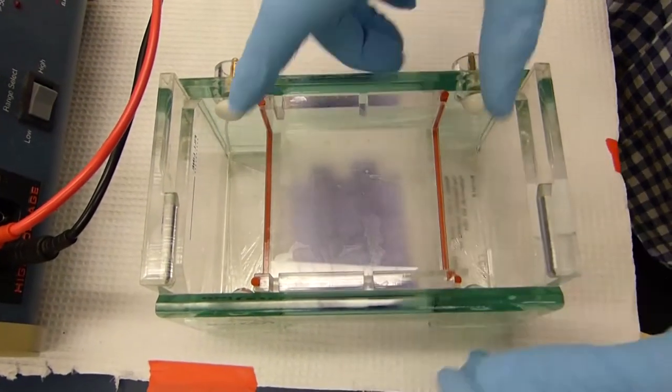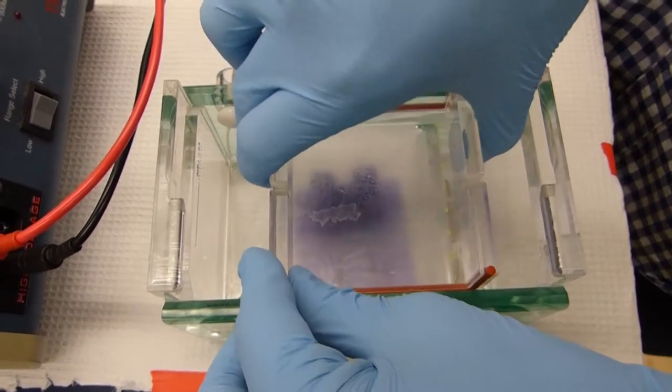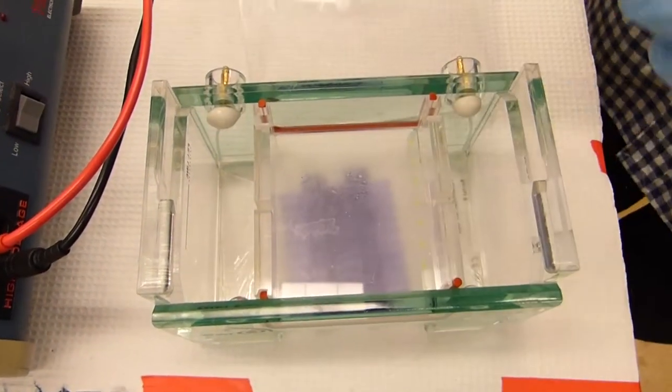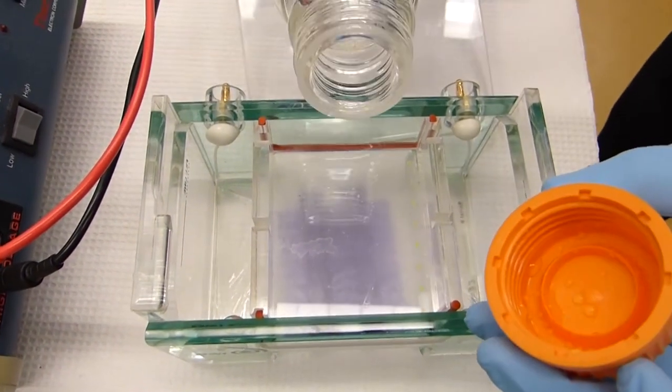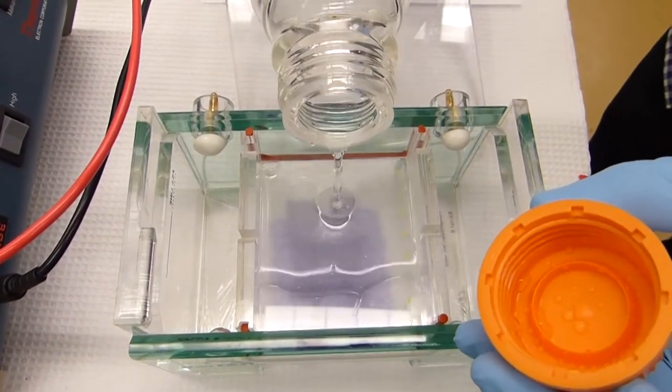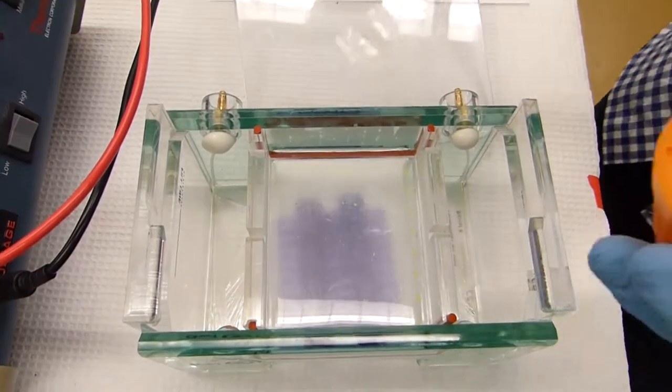To make the gel, I'm pouring molten agarose into the gel cassette. The solution is 1% agarose made with TAE buffer and contains ethidium bromide so we can later visualize the DNA. One gel requires about 50 milliliters of solution and after pouring we let the gel solidify.